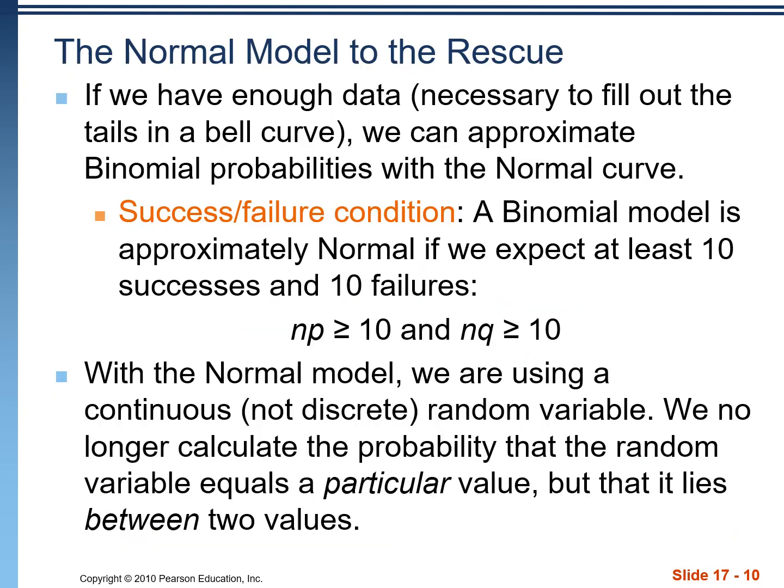Now we want to take this method and we want to apply it to a normal model. And we can do that as long as it meets a certain criteria, namely the success fail condition. Success failure condition is just making sure that we have enough data in our normal curve to fill out the tails and actually get that bell-shaped curve. So a binomial model is approximately normal if we expect at least 10 successes and failures. We would find that by doing N times P. We want that number to be greater than or equal to 10. And the same thing with N times Q.